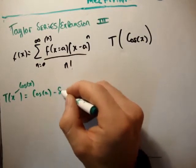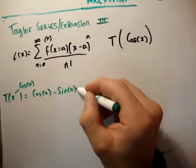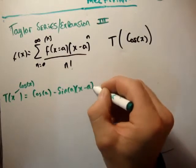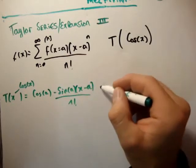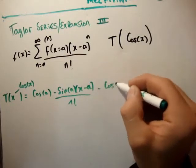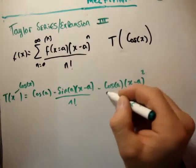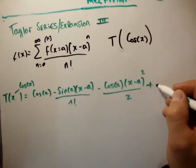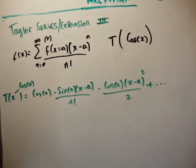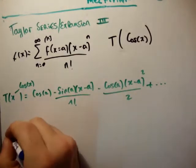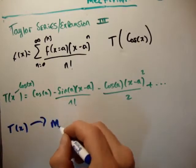minus sin a times x minus a divided by 1 factorial, minus cos a times x minus a squared divided by 2 factorial, plus and so on. And we know that in order to get from T of x to M of x, we set a is equal to 0.